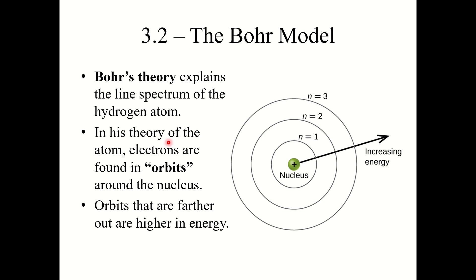So in his theory, electrons are found in orbits around the nucleus. We imagine the nucleus, which has our protons and neutrons, kind of like the sun at the center, and the electrons are in orbits circling the nucleus. Orbits that are further out are higher in energy. As we go further away from the nucleus, the energy of the electrons increases.